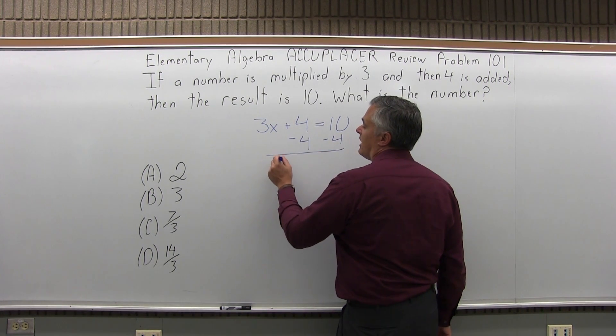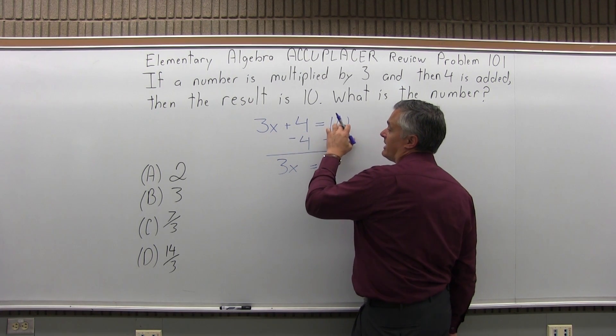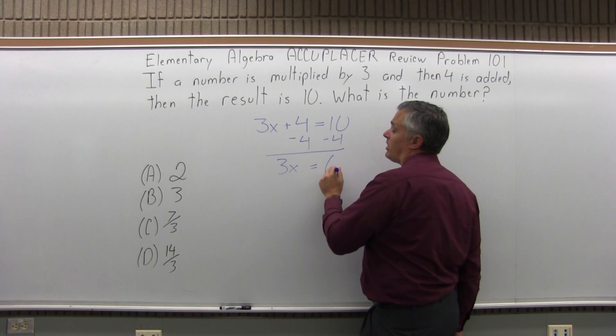By subtracting 4, I'll get 3x equals, so plus 4 and minus 4 on the left cancel and on the right I have positive 10, negative 4 will be positive 6.